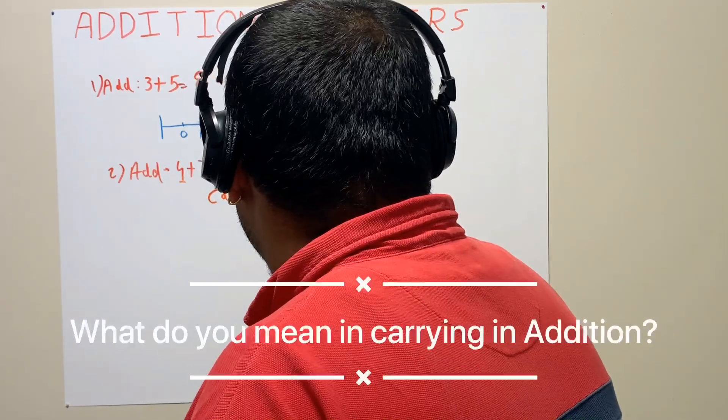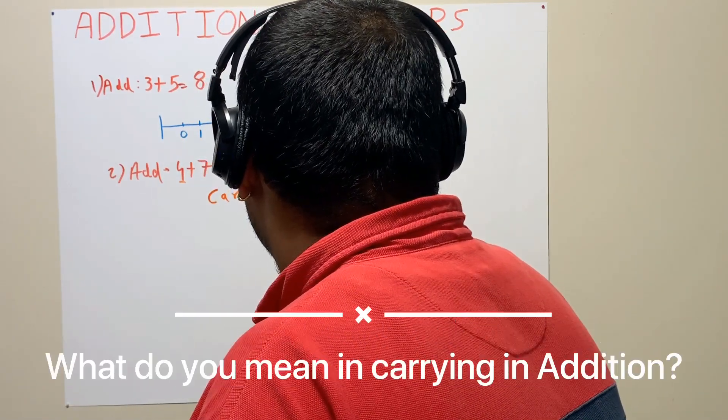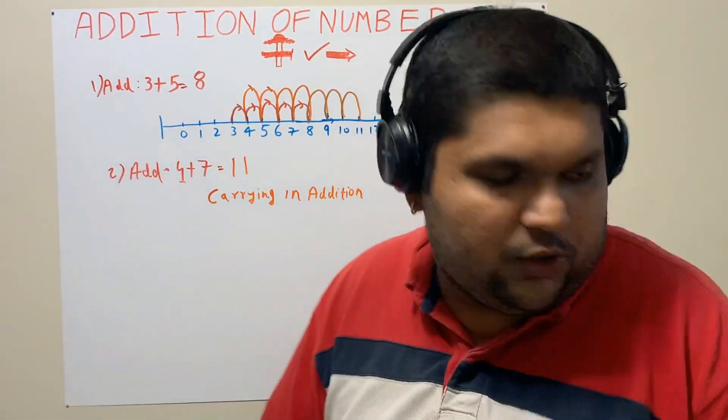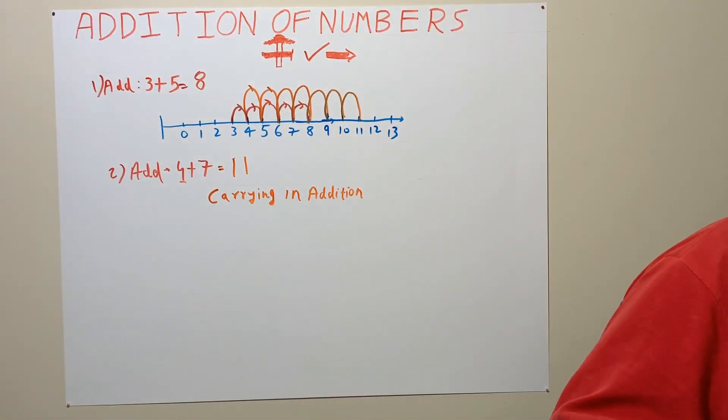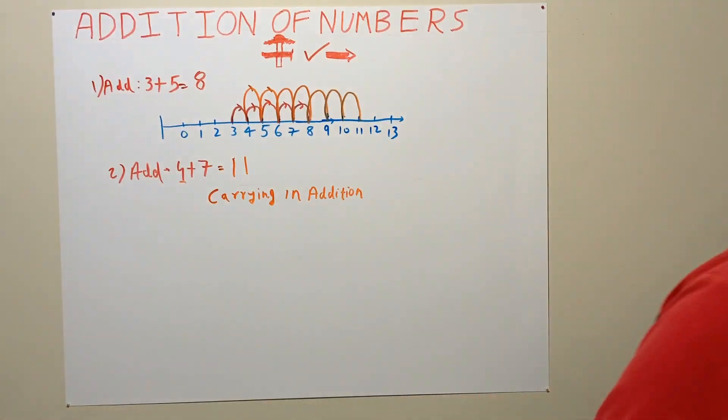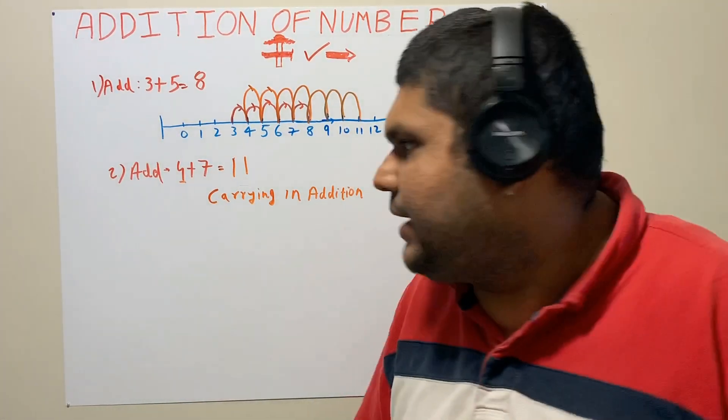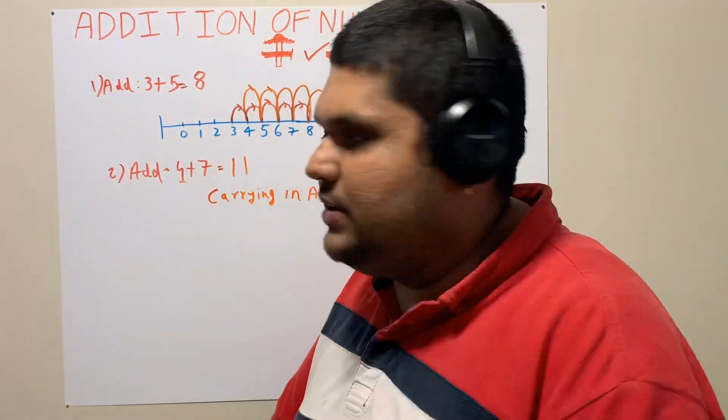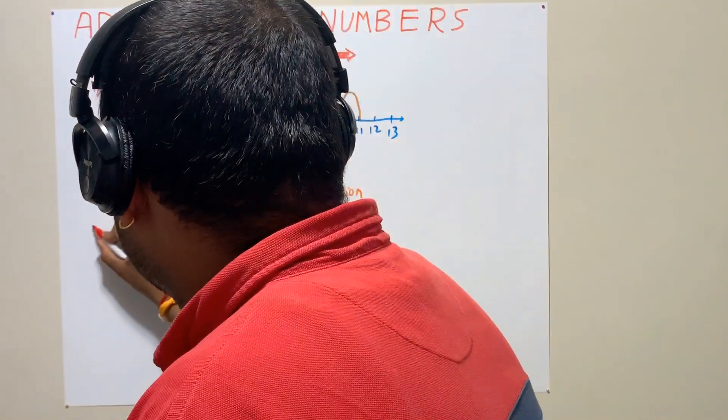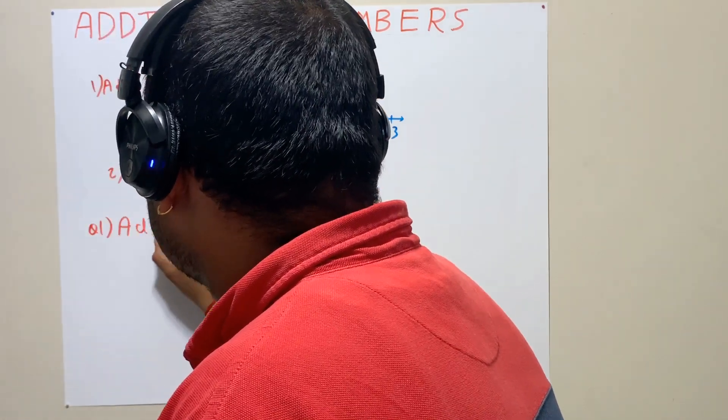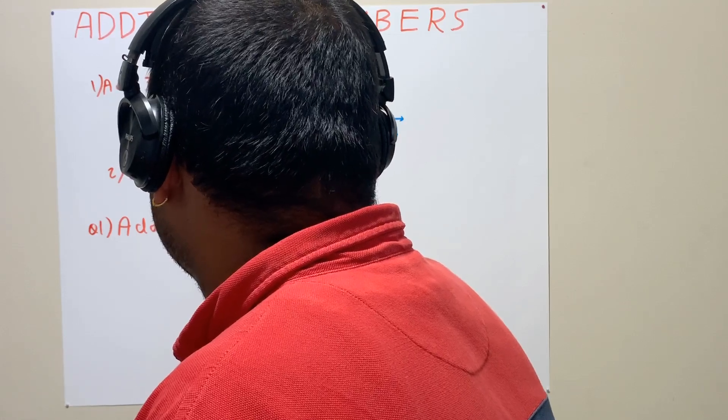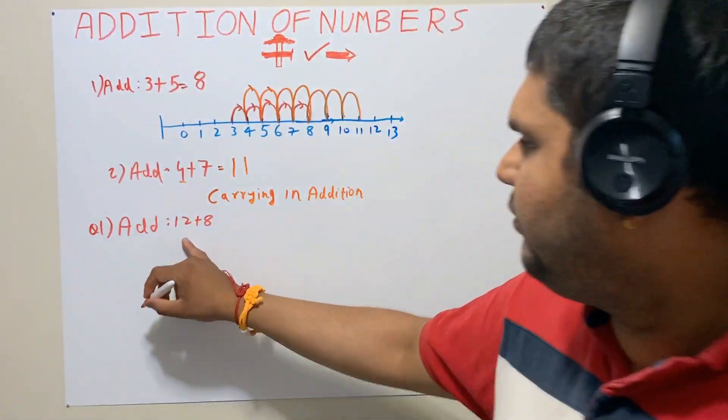What do you mean by carrying in addition? It means, let's say we have a two digit number. First of all, how to add two digit numbers? We will learn adding a two digit number and a single digit number. So let's say my question number one is add 12+8.